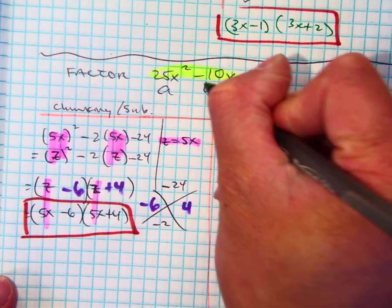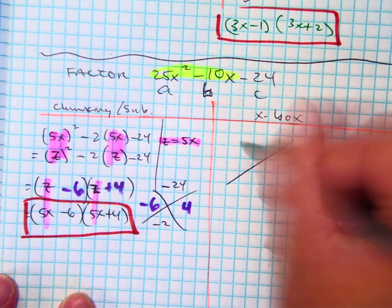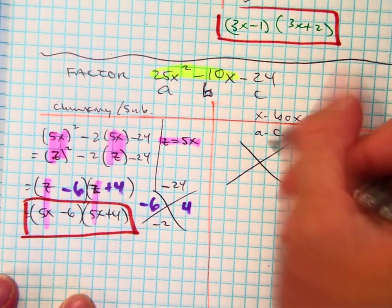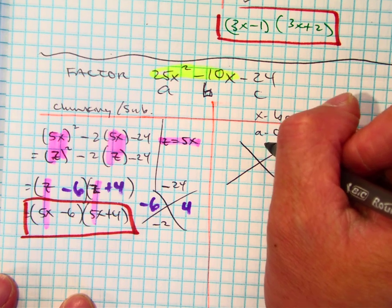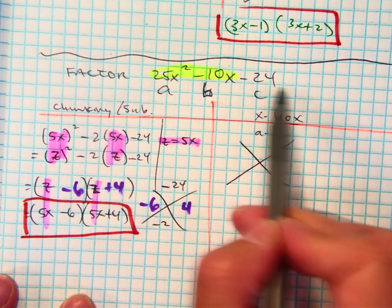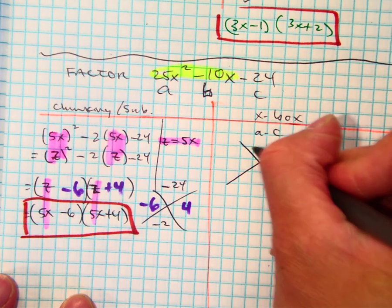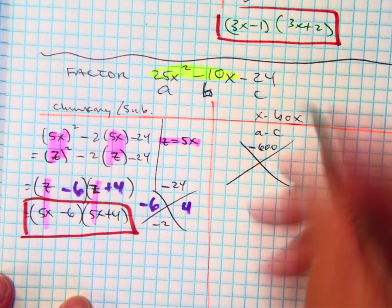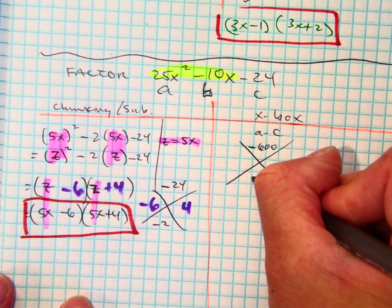A, B, and C. A times c. How much? Negative 600. Negative 600? That's right. Is that right? And b value is? Negative 10.